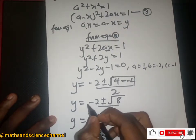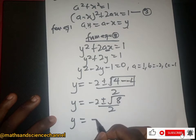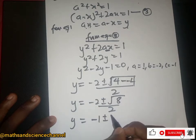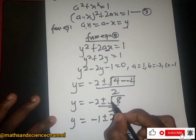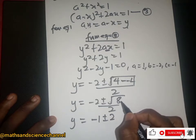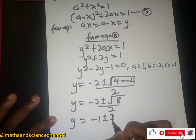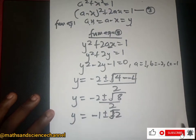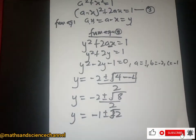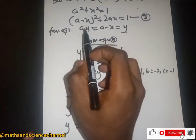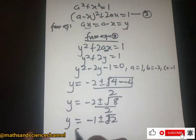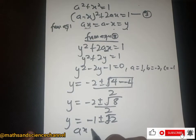From this we get two roots. So y is negative 1 plus or minus root 2, giving us y equals negative 1 plus root 2 or y equals negative 1 minus root 2.